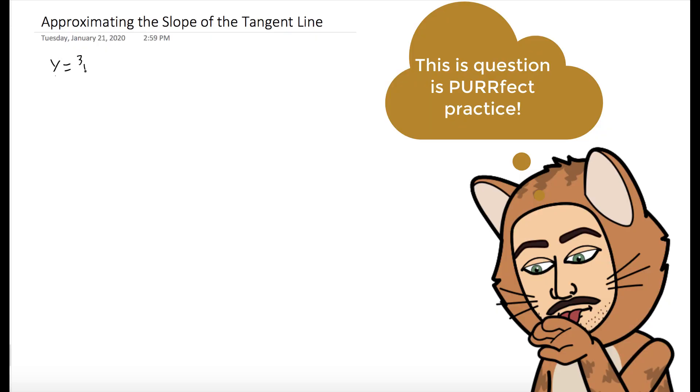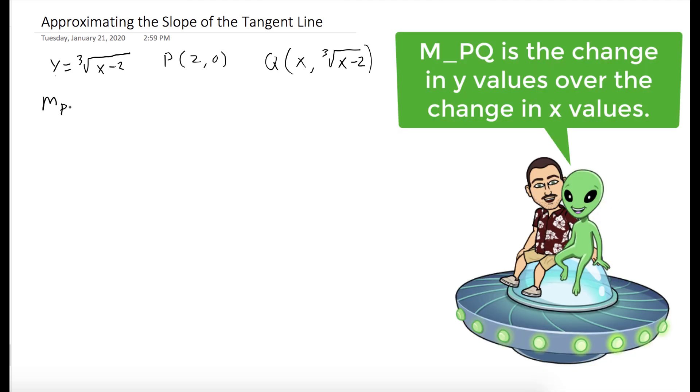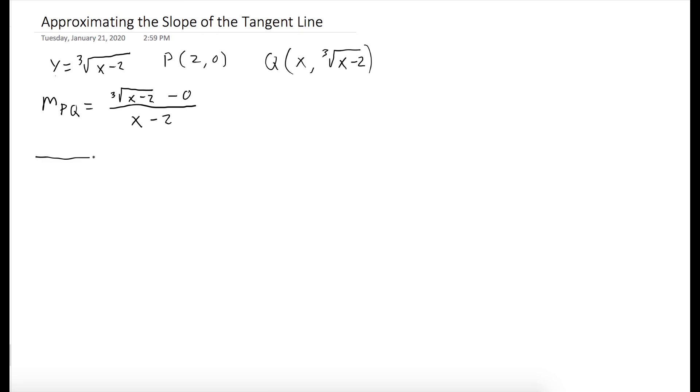So the curve is y equals the cube root of x minus 2, and our point is (2, 0). We'll take some arbitrary point Q, which is going to have components x and the cube root of x minus 2. And what we're going to do is we'll just take values of Q that are close to 2, and our slope between P and Q is as follows.